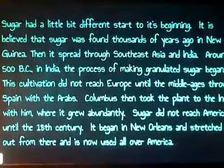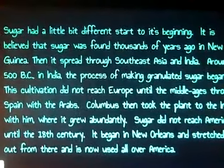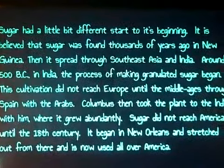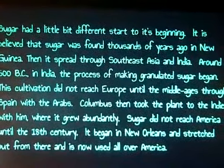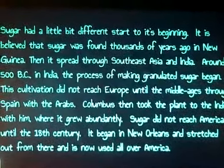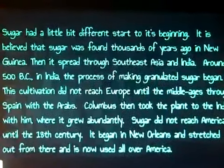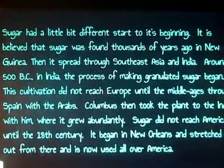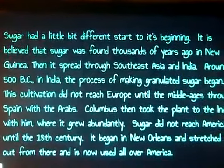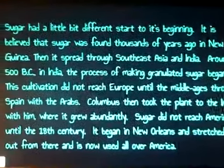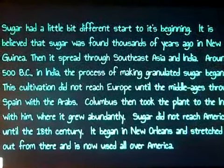Now, on to the sugar's history. Sugar had a little bit different of a start to its beginning. It is believed sugar was found thousands of years ago in New Guinea, then spread through Southeast Asia and India. Around 500 B.C. in India, the process of making granulated sugar began. This cultivation did not reach Europe until the Middle Ages through Spain with the Arabs. Columbus then took the plants to the Indies with him, where it grew abundantly. Sugar did not reach America until the 18th century. It began in New Orleans and stretched out from there and is now used all over America.